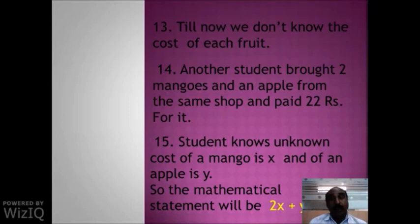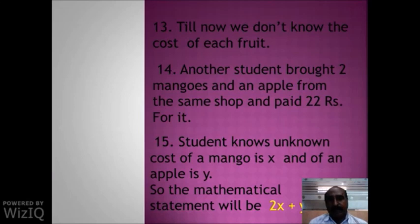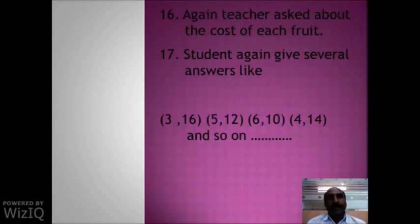Another student bought two mangoes and one apple from the same shop and paid Rs. 22 for it. The student knows the unknown cost for a mango is x rupees and for an apple is y rupees. So the mathematical statement will be 2x plus y is equal to 22. The teacher again asked about the cost of each fruit — can you tell me the cost of each fruit?